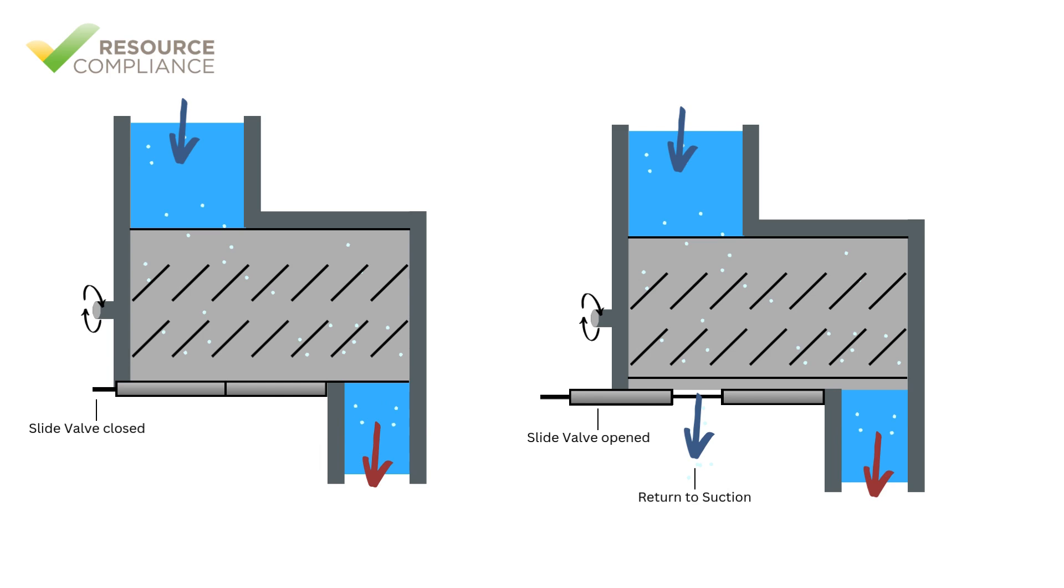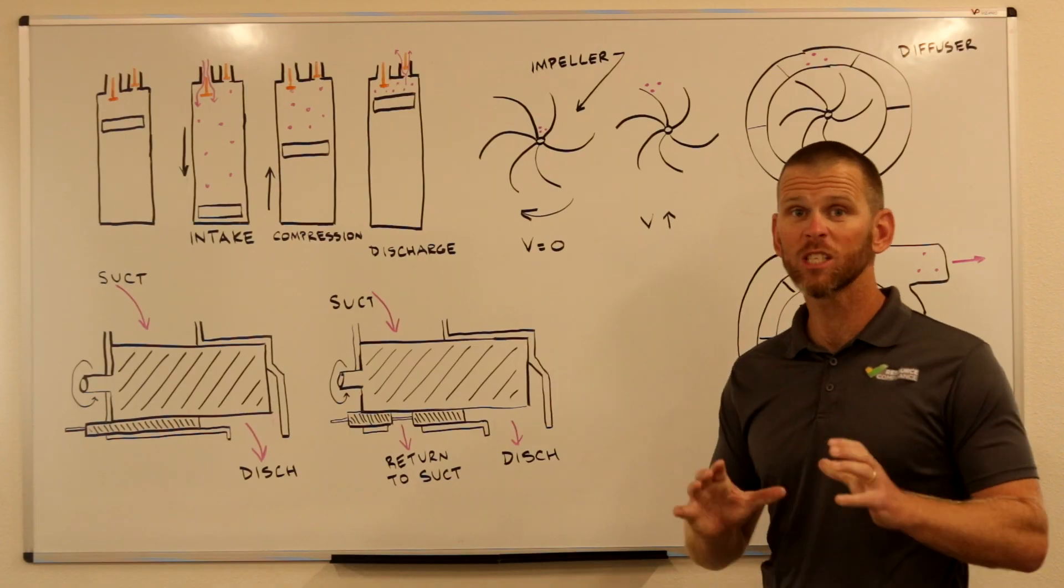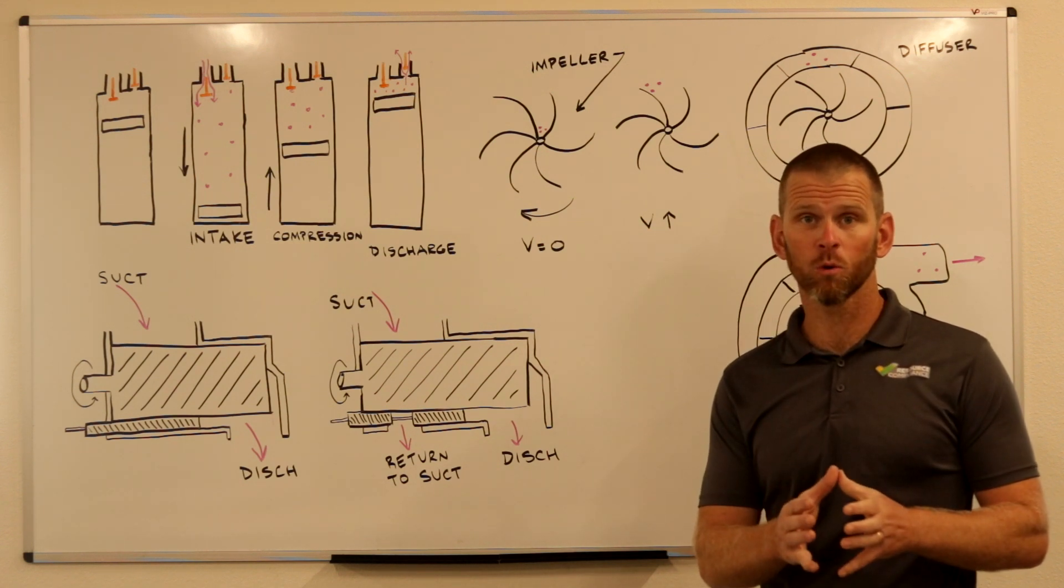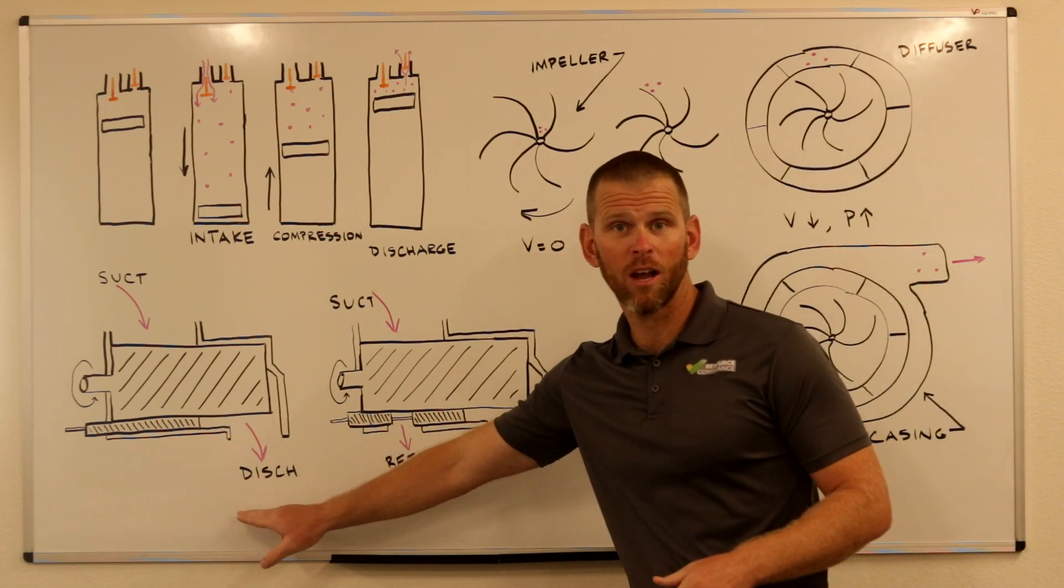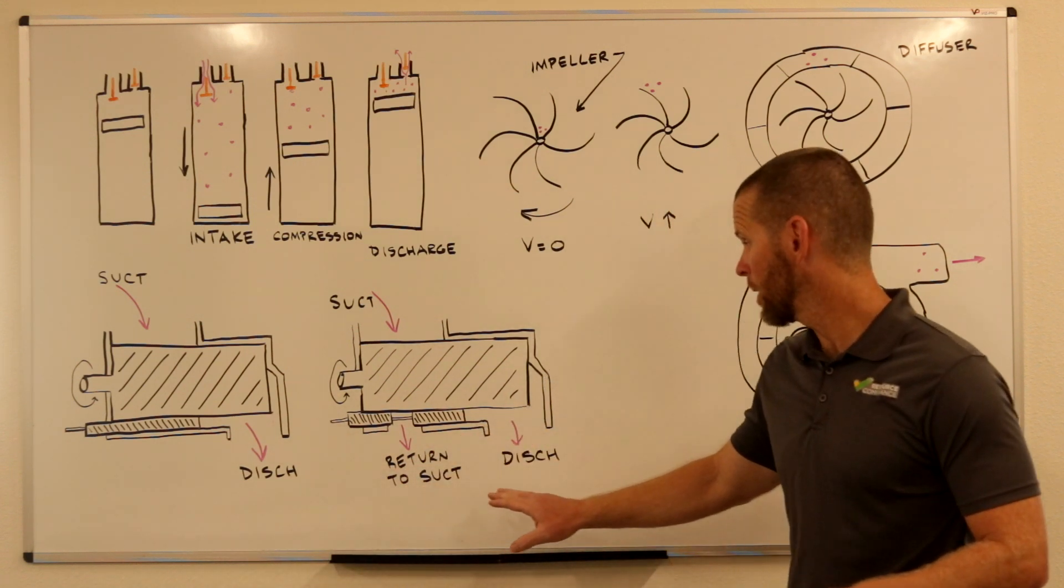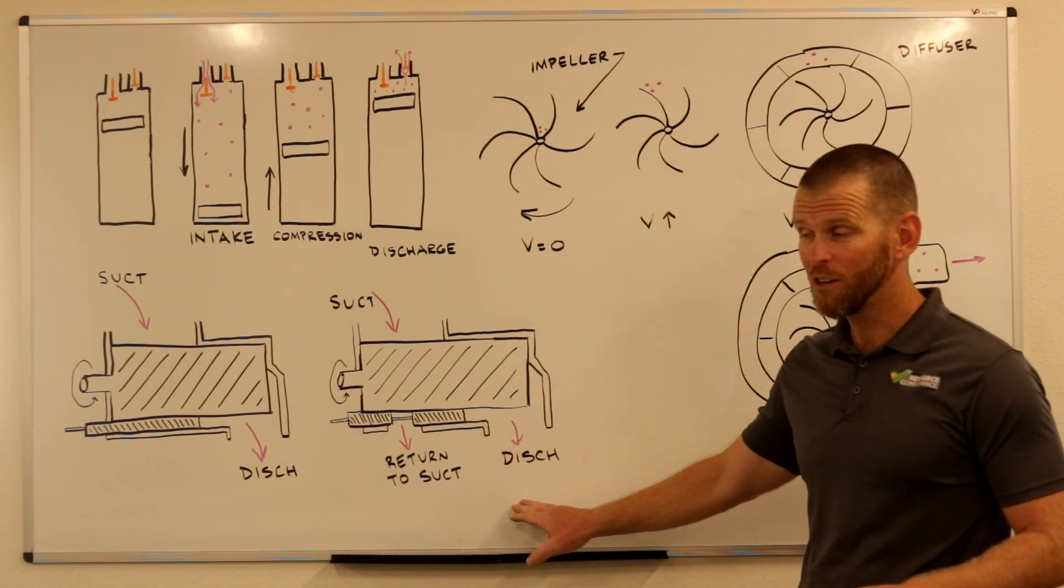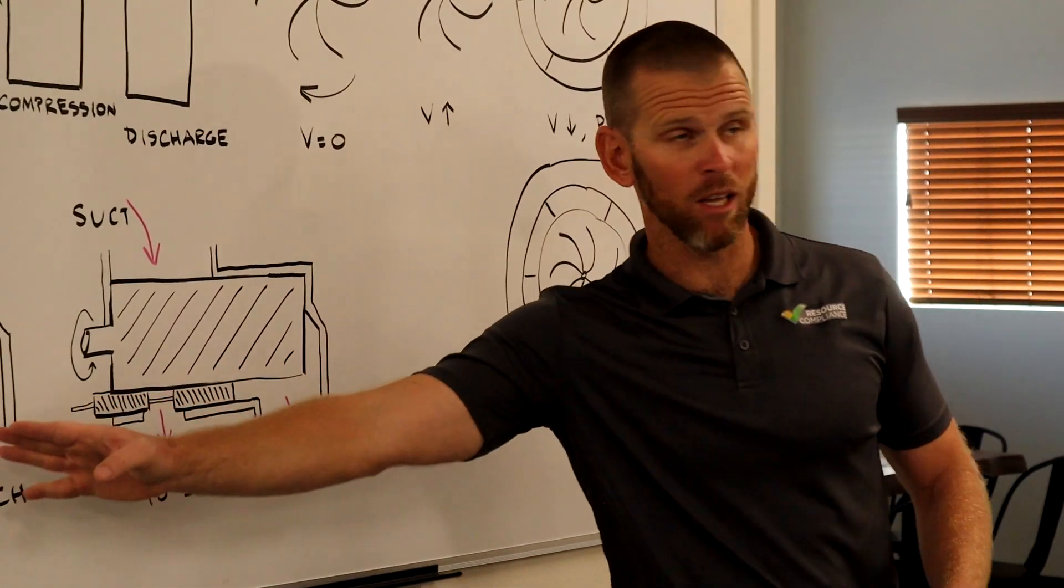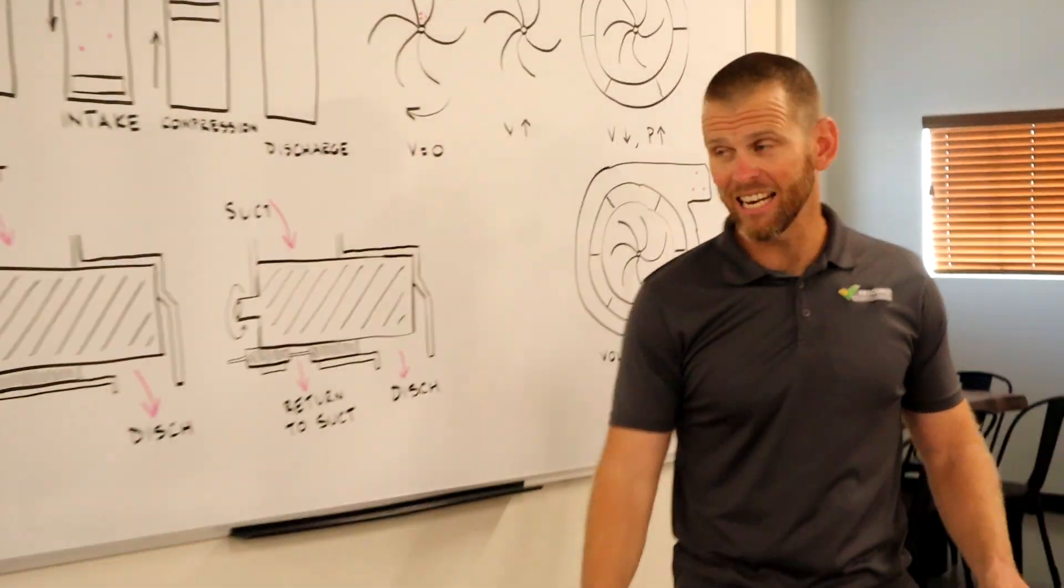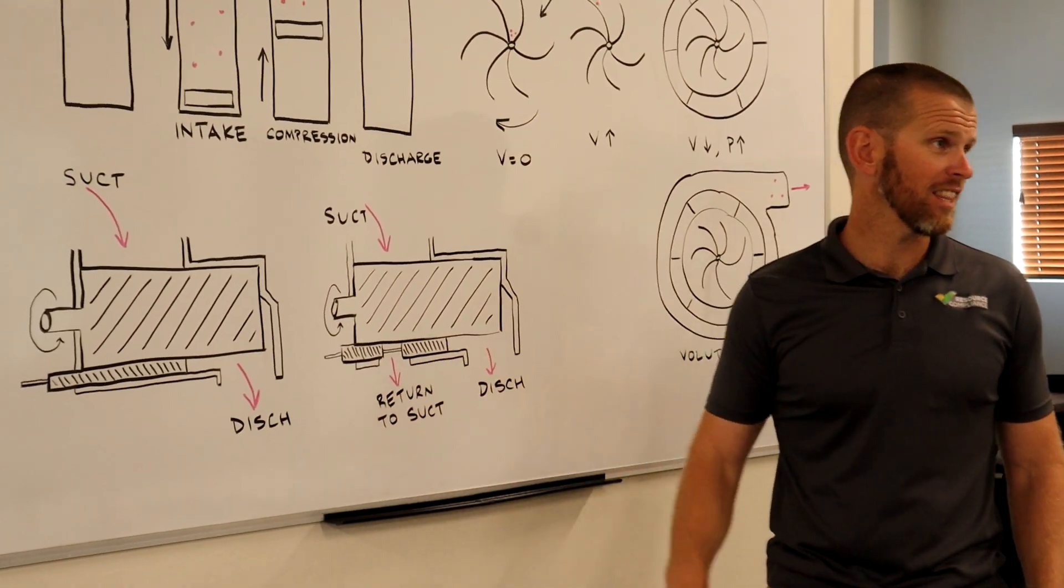Slide valves allow screw compressors a continuous range of unloading, typically from 100% down to 10% of their full capacity. So to explain capacity control in a screw compressor, I've modified the diagram we use to talk about variable volume just slightly.